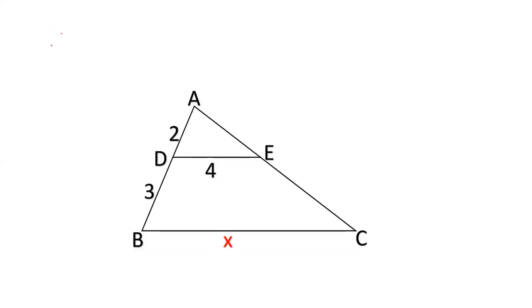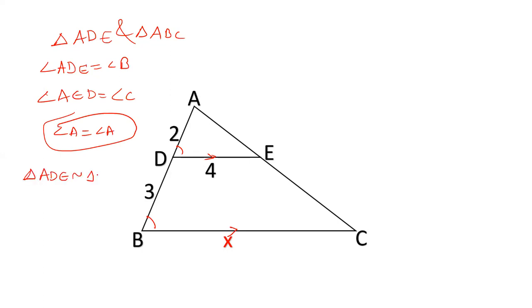To solve the question, we will take triangle ADE and triangle ABC. In these two triangles, these two sides are parallel, so these angles are equal. Angle ADE equals angle B, angle AED equals angle C, and angle A is common. By angle-angle corollary, these two triangles are similar.